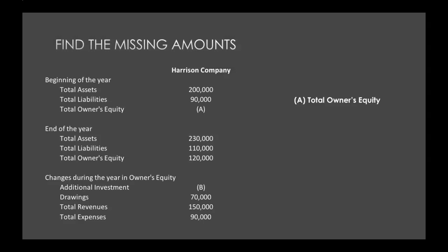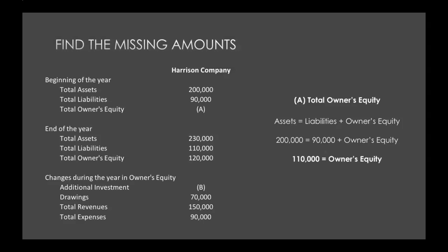What do we have from the beginning of the year? We're told our assets and our liabilities. By knowing those two pieces, we can figure out our owner's equity by plugging it into our accounting equation. So assets equals liabilities plus owner's equity. So $200,000 equals $90,000 plus owner's equity, which gives us an owner's equity of $110,000 — we subtract $90,000 from each side. So that's what we started the year with in our owner's equity.